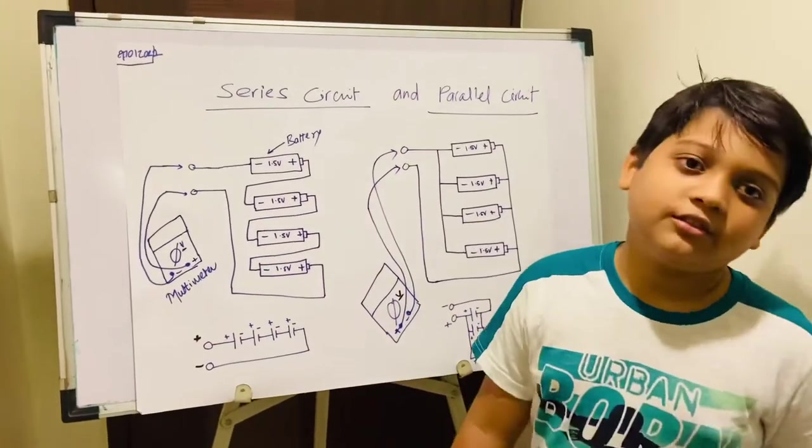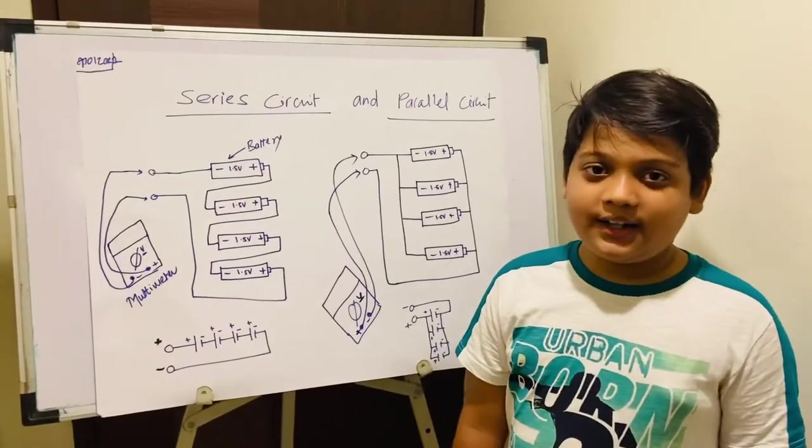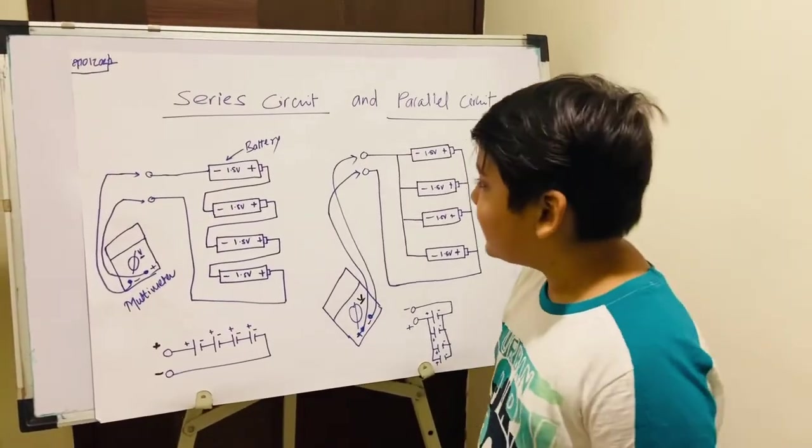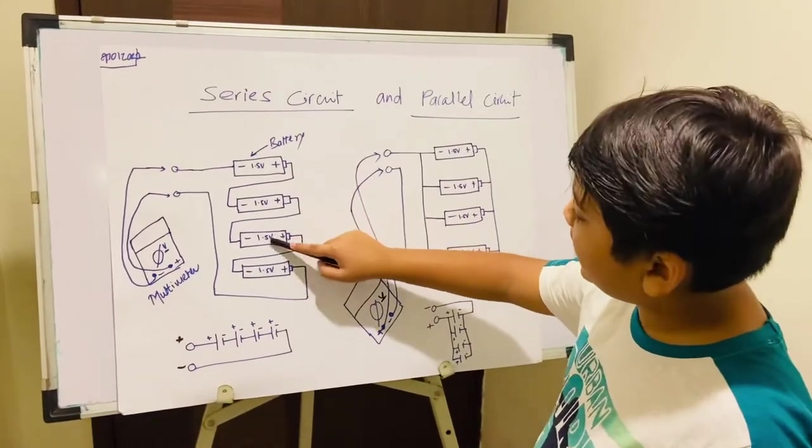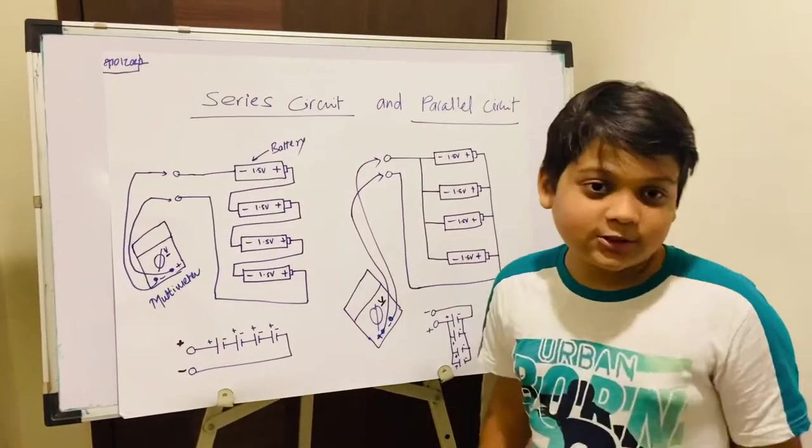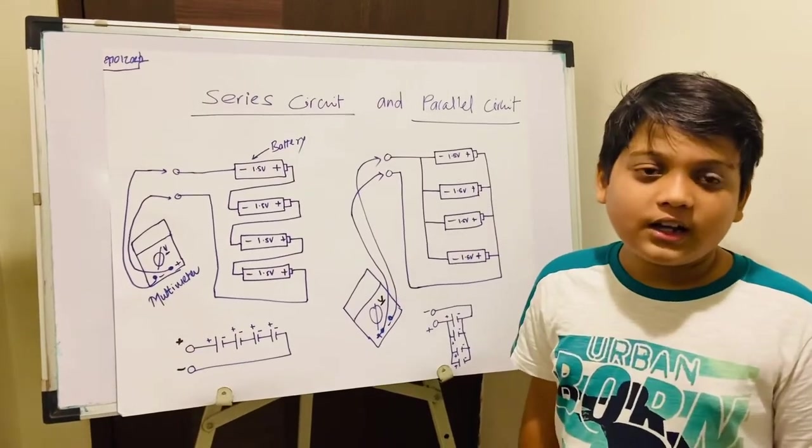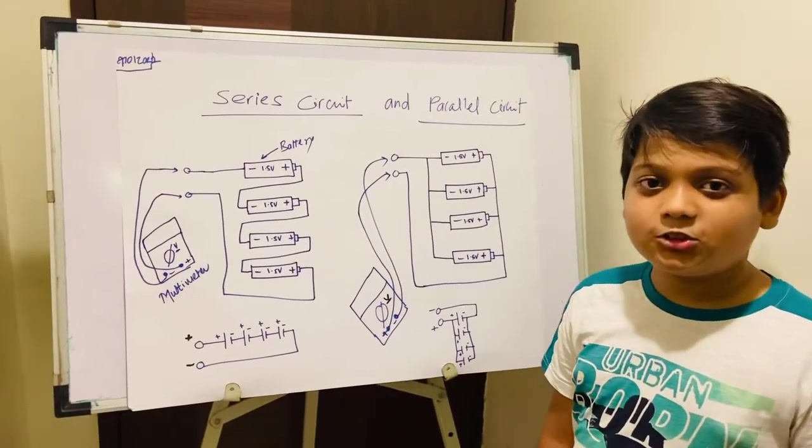This is the actual presentation and this is the symbol representation. So each battery has 1.5 voltage, so 1.5 plus 1.5 plus 1.5 plus 1.5 equals 6.0 volts. Now we are going to see it in the actual experiment.